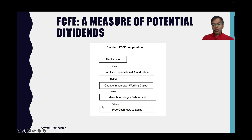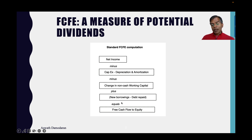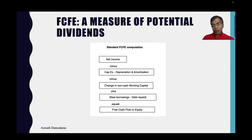Notice that every item in this picture comes out of one accounting statement — the statement of cash flows. Net income is at the top of the operating cash flow line. Working capital items show up in the operating cash flow segment. Capex shows up in the investing activities — and in capex you should probably also include cash acquisitions. New borrowings and debt repaid will show up in the financing section. So this isn't rocket science; you can compute that for every company, and that is what I do for every company in my data set.